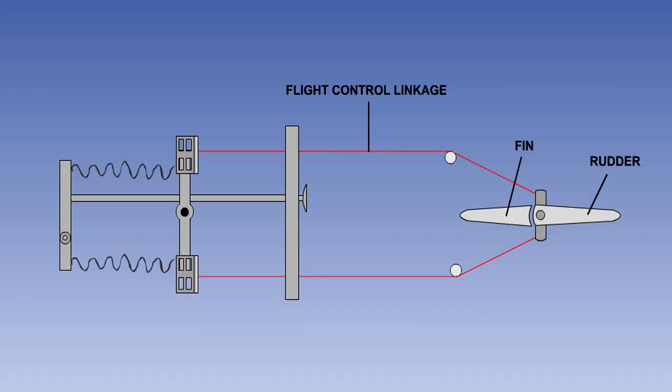In the spring bias type of trim system, an adjustable spring is used to reduce the stick force. No tabs are required so the spring system does not have the disadvantages associated with tabs. The spring bias system differs from the other systems discussed so far in that the device is connected not to the flying control surface but to the pilot's control.